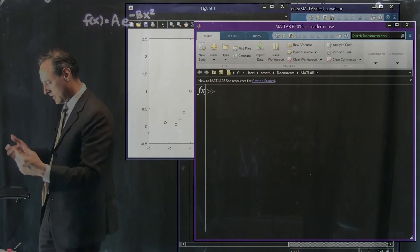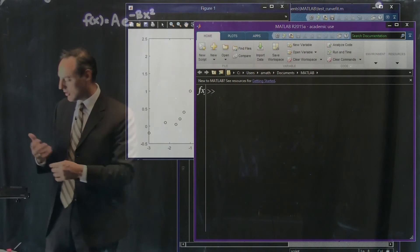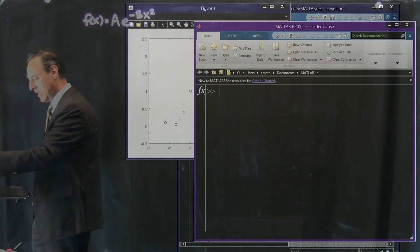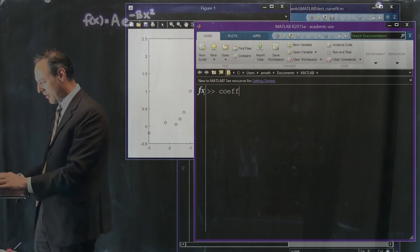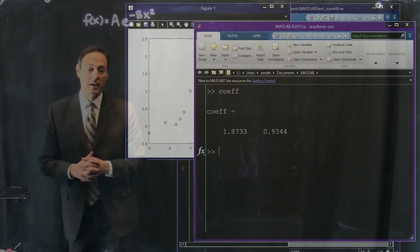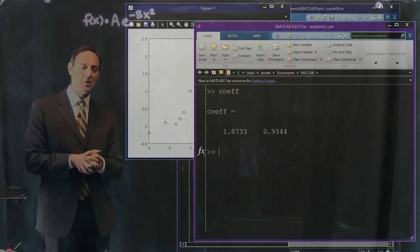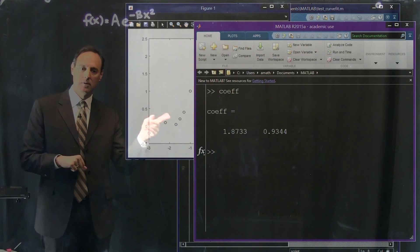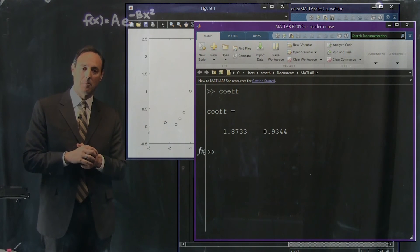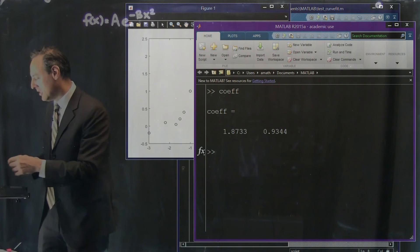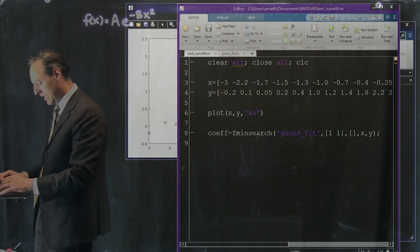Okay, it ran but now we have to plot it. All right, so let's go back and plot it. In fact, we can look at what cof is. What did it give us? Okay, here are two values that came out of the algorithm: 1.8733, that's the a value. The b value came out 0.9344. So let's plot what those look like in practice.